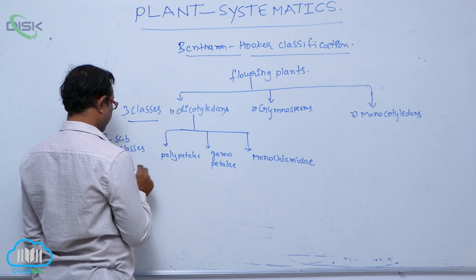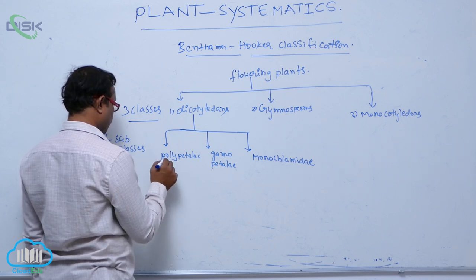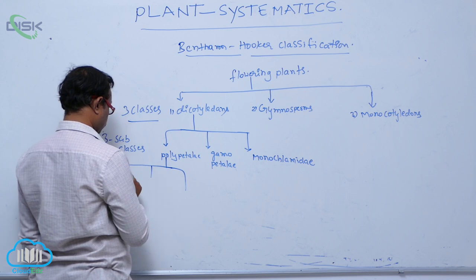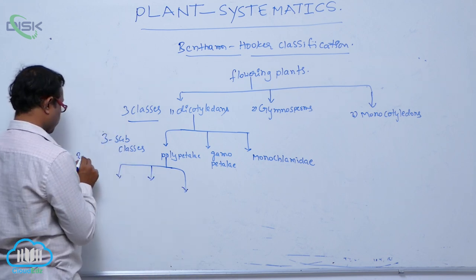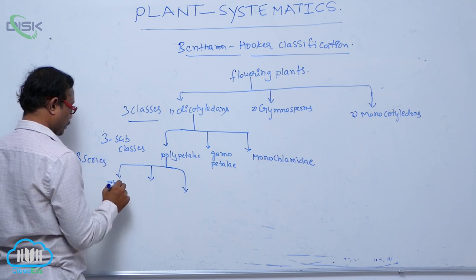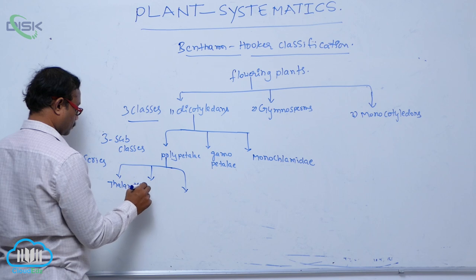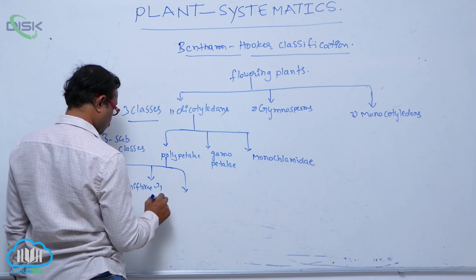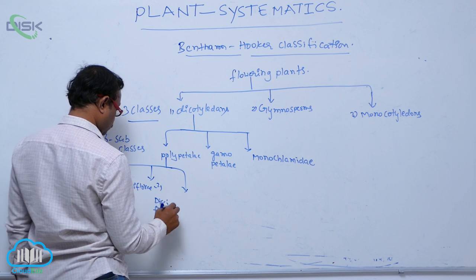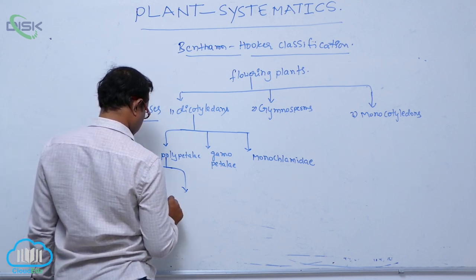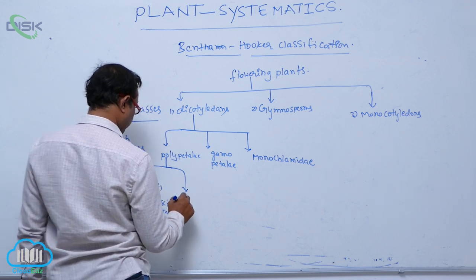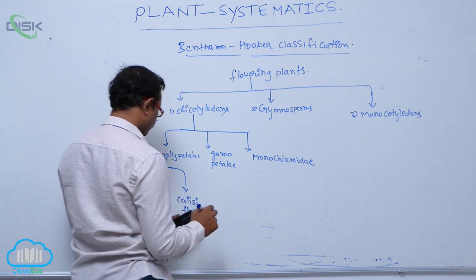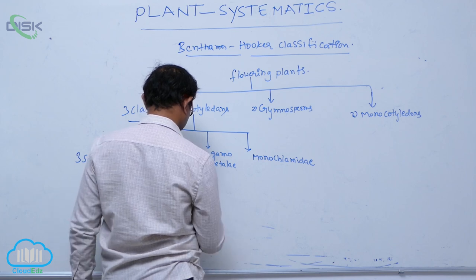Polypetalae is again divided into three series. The first one is Thalamiflorae, the second one is Disciflorae, and the third one is Calyciflorae.